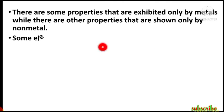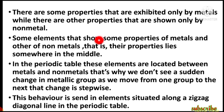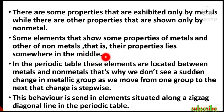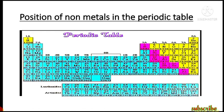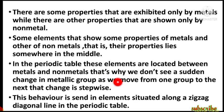There are some properties exhibited only by metals, and others shown only by nonmetals. Some elements show properties of both — their properties lie somewhere in the middle — these are known as metalloids. In the periodic table, metalloids are located between metals and nonmetals, so we don't see a sudden change in metallic character as we move from one group to the next — the change is stepwise.